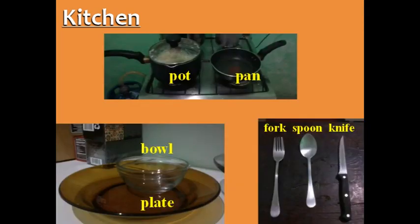There are many objects in the kitchen, but the most common are pots, pans, bowls, plates, forks, spoons, and knives.